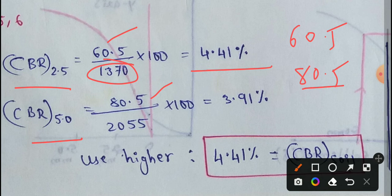Using the value of 2055kg into 100, we get a CBR value of 3.91%.